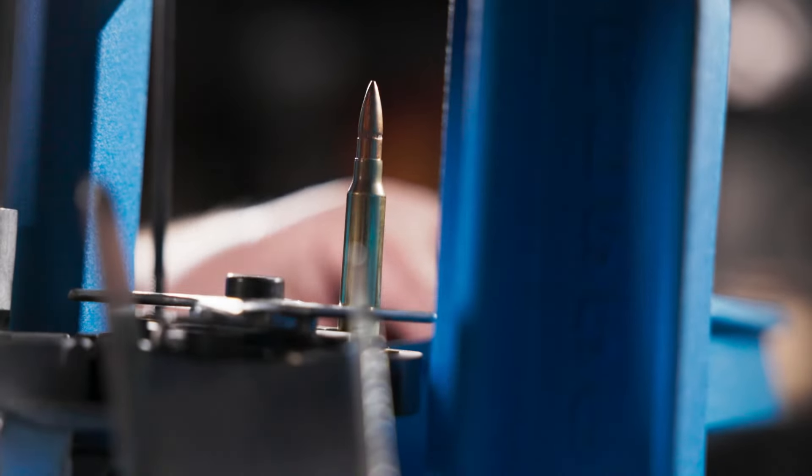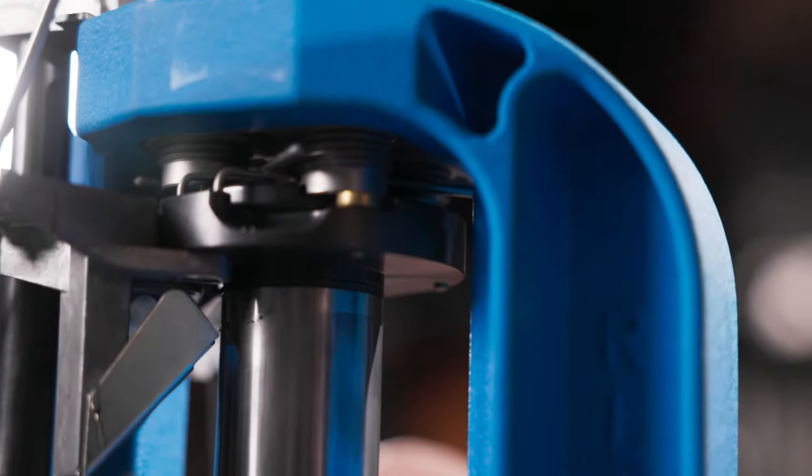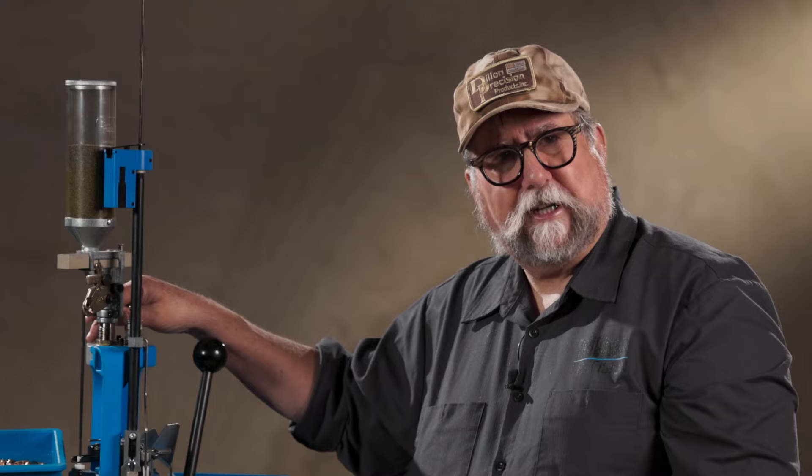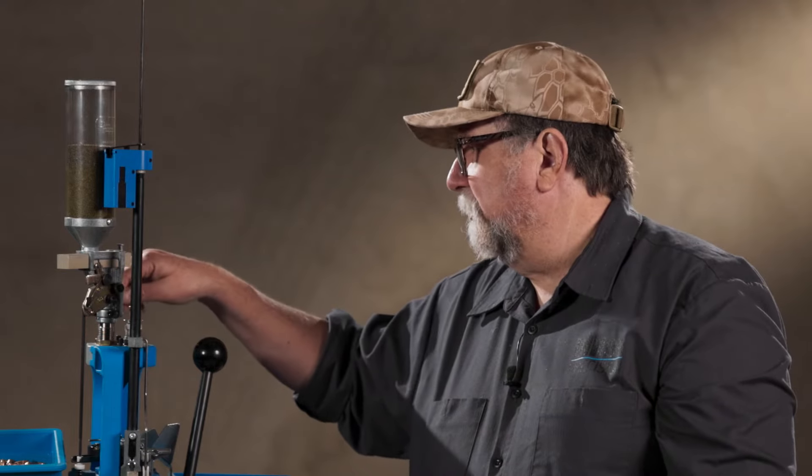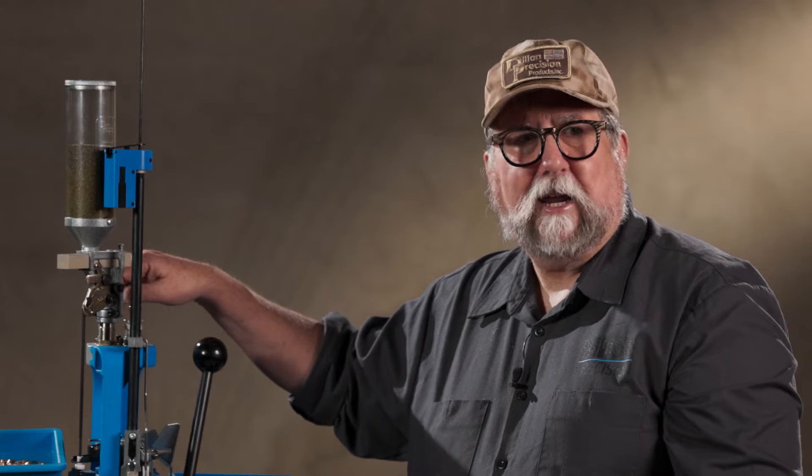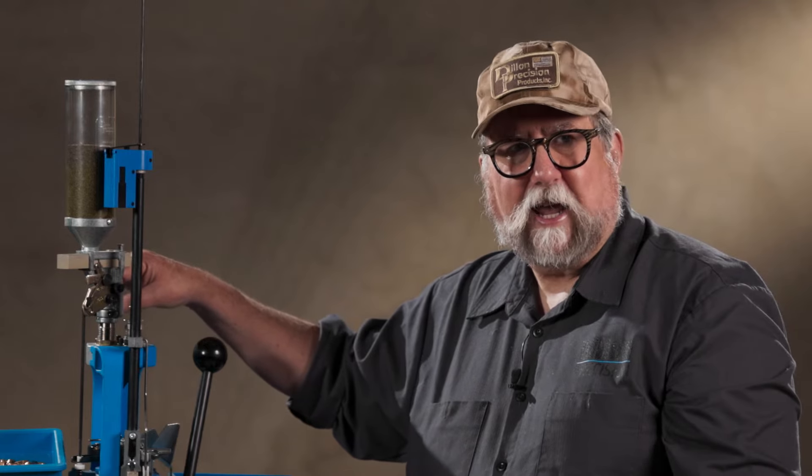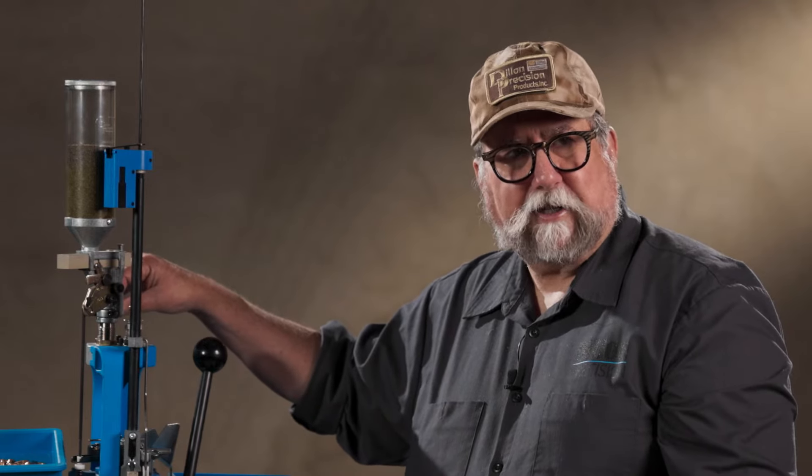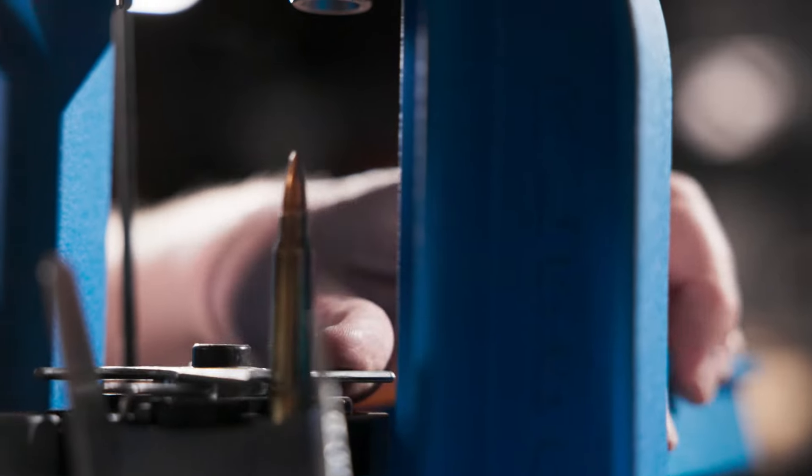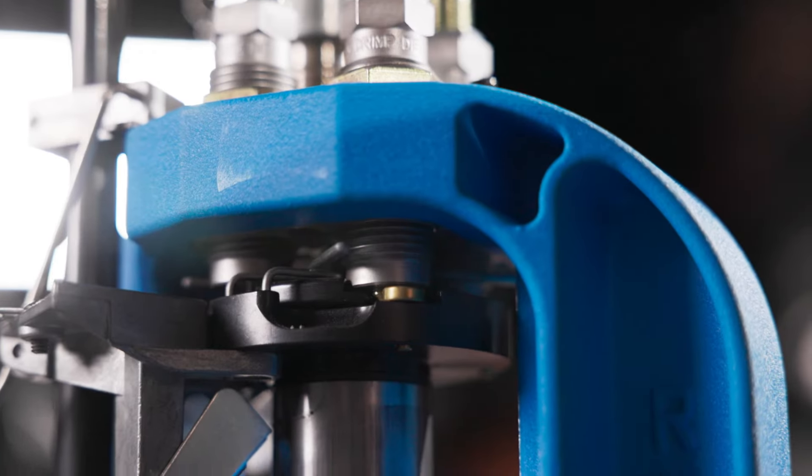Third station, you'll set a bullet on the case mouth by hand. When you pull the handle down the bullet is seated. By adjusting the seating stem in the top of the die, you can infinitely adjust how deep the bullet is pressed in the case. Fourth station is for a separate crimp if necessary.